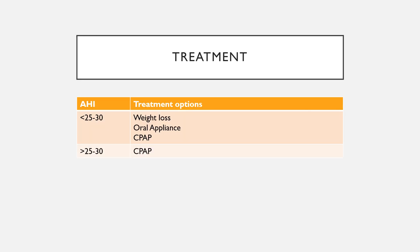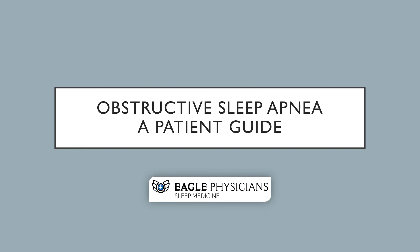Briefly, in terms of treatment options: once we've decided whether you need to be treated, if your AHI is less than the 25 to 30 range, you have three treatment options. You could consider weight loss, assuming you're significantly overweight, or we could consider an oral appliance or CPAP. If you have more than 25 to 30 events per hour, CPAP is really your only choice. Thanks for watching this brief review on obstructive sleep apnea. It's going to help you understand your results and treatment recommendations that I will share with you in just a minute.